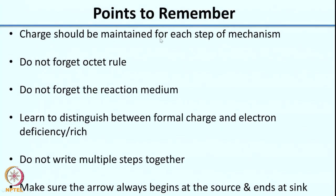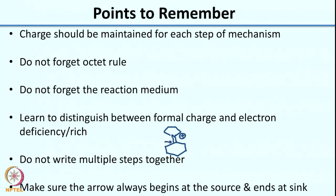Here are some points to remember when writing reaction mechanisms. First, charge has to be maintained for each step — I emphasized this in all three mechanisms we wrote. Second, do not forget the octet rule — you cannot have more than the allowed number of bonds at a particular atom. Third, do not forget the reaction medium: acidic medium will not have OH⁻ and basic medium will not have H⁺. Fourth, learn to distinguish between formal charge and electron deficiency — in the earlier example the charged species had the electron-deficient center at the carbon next to the nitrogen.